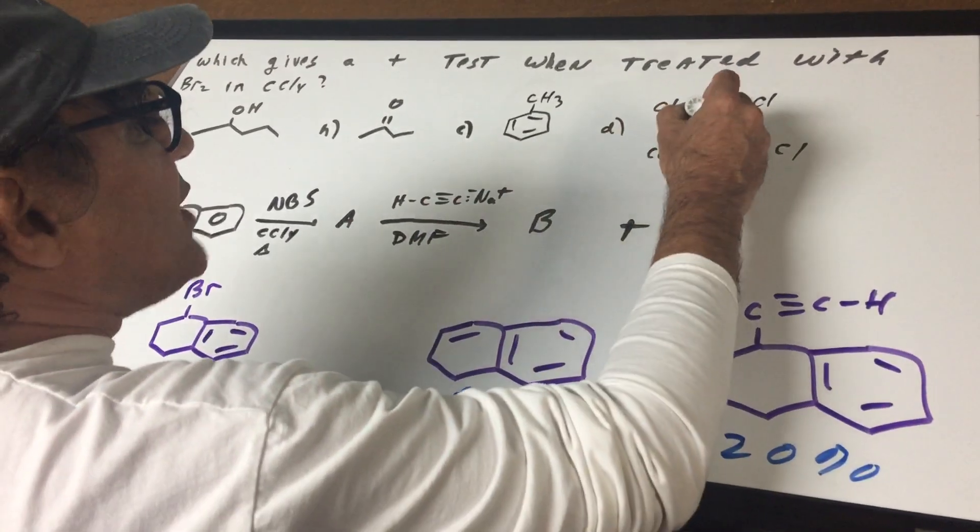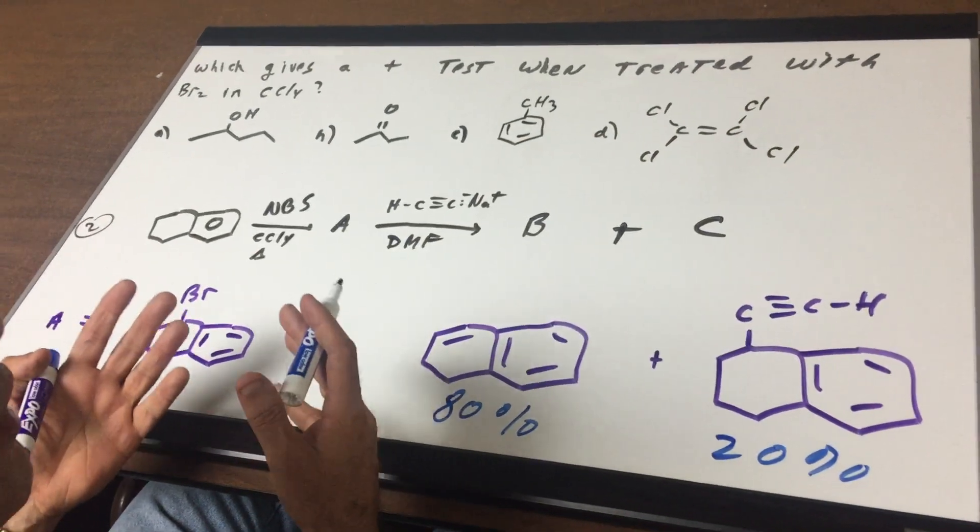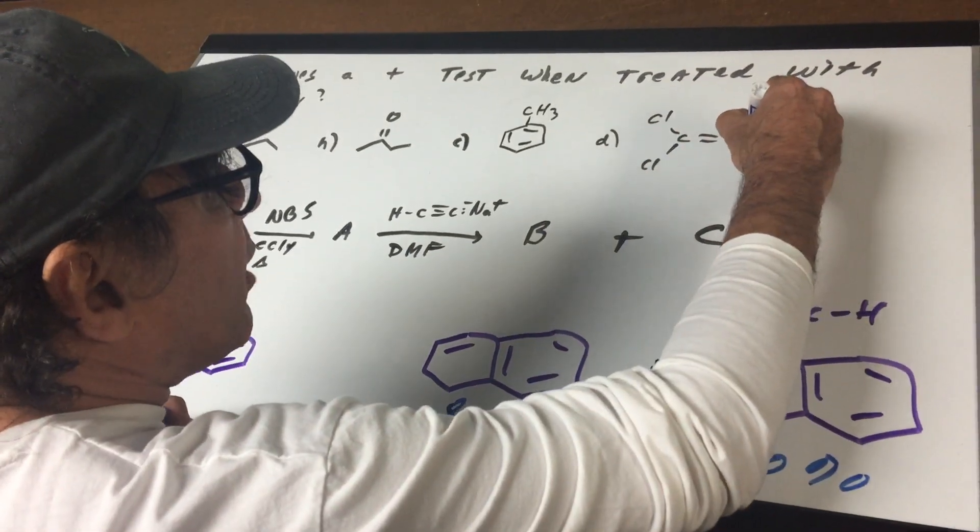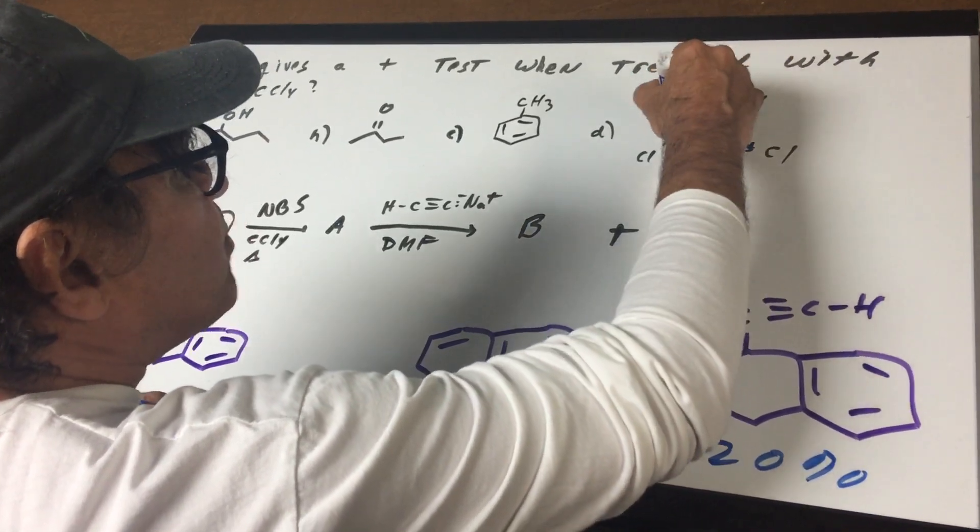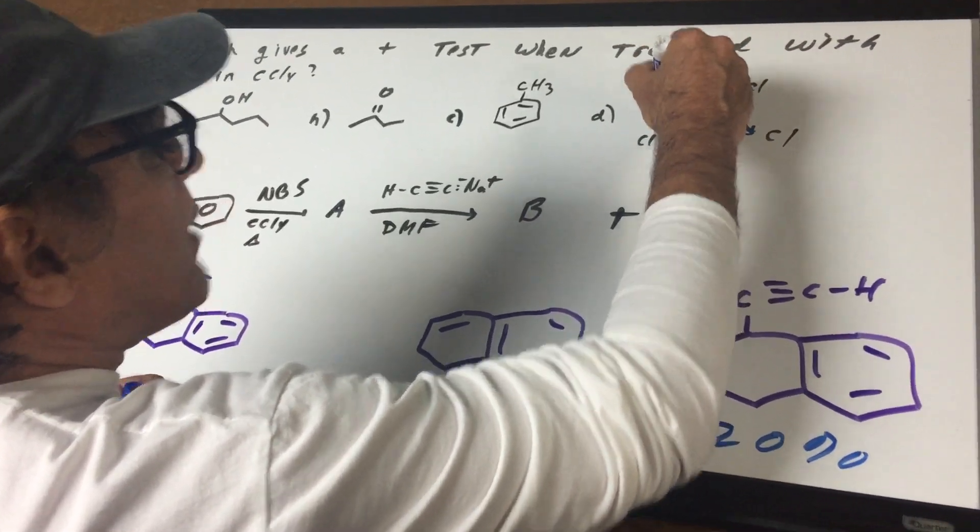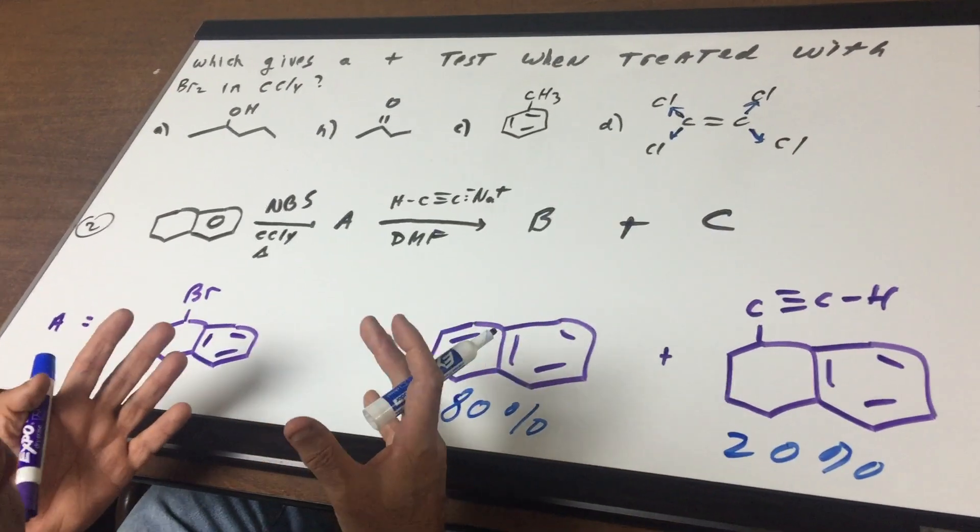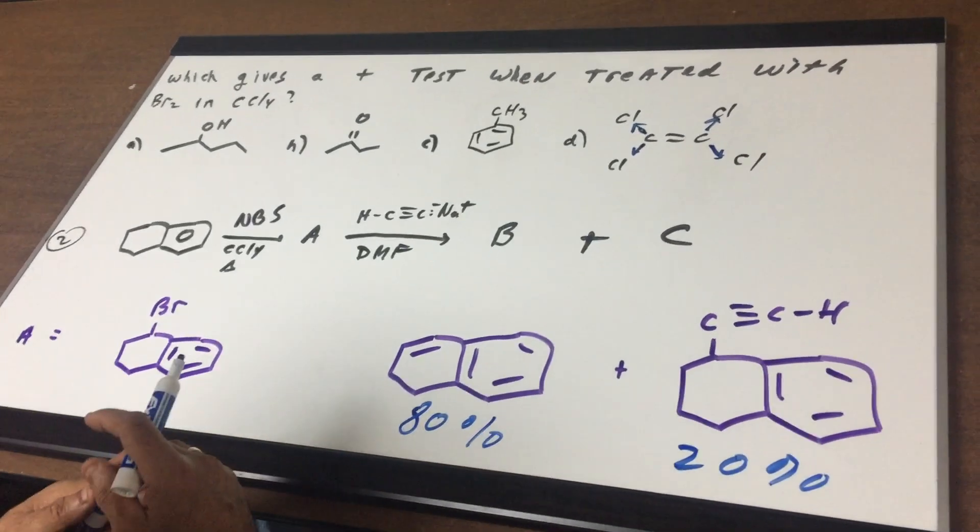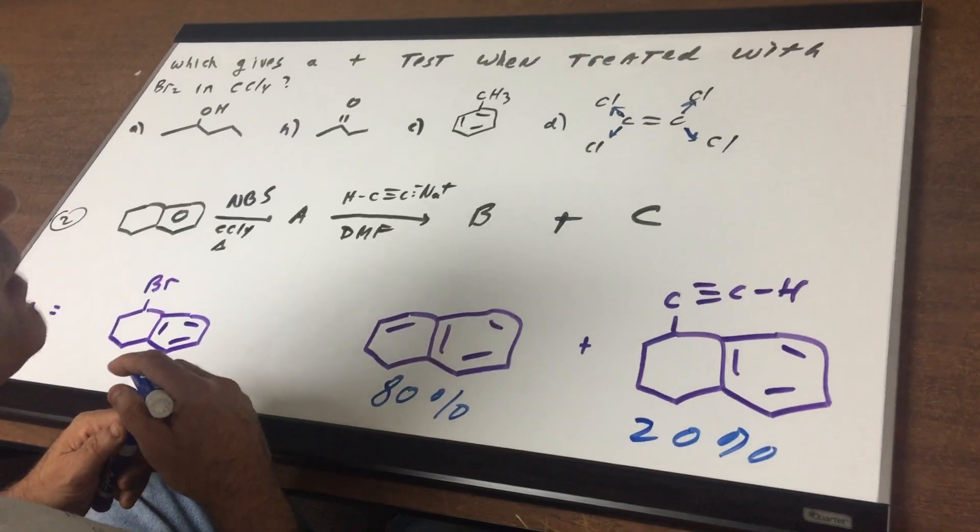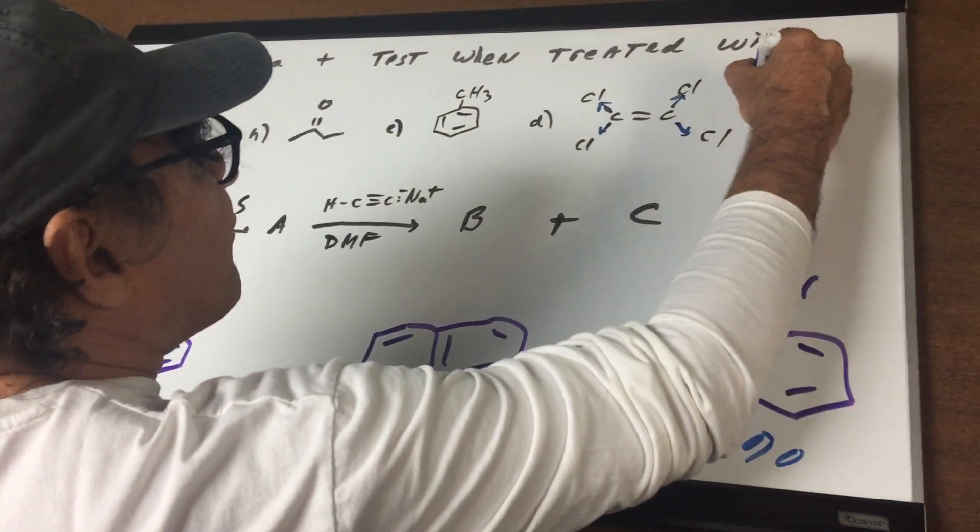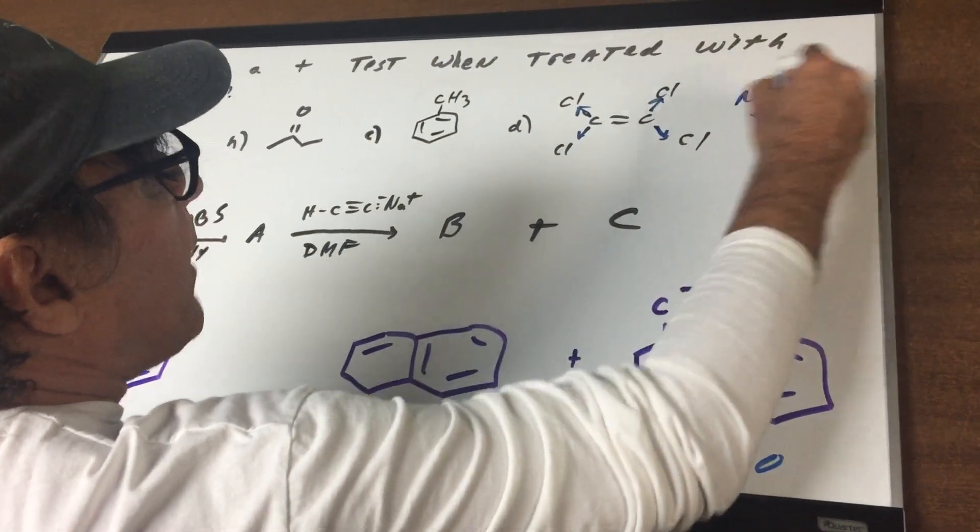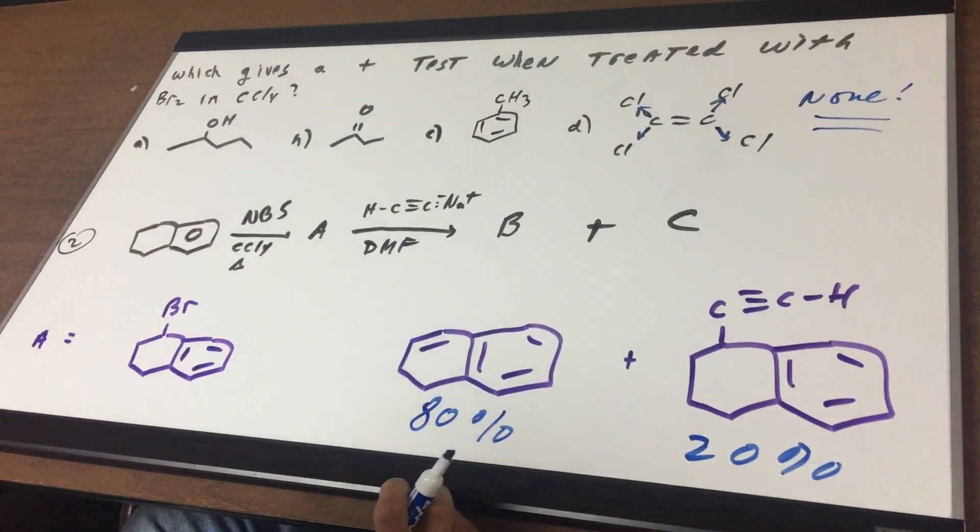However, this double bond is so electron poor. Look what's happening. You are having these groups all withdraw electron density. So that means that this is going to be so electron deficient, no reaction. So the answer would be none of these. None of these would give a positive test. That's a hard question.